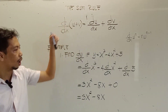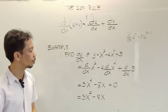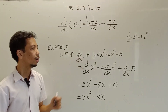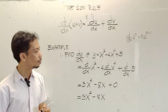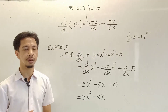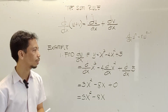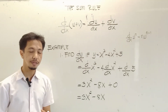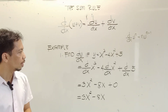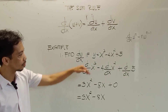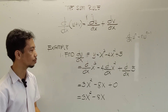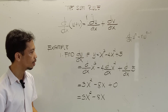Our definition says that to find the derivative of this function, simply find the derivative of each term, then simplify. So let's go ahead to our example. Again, our example is y is equal to x cubed minus 4x squared plus 5.